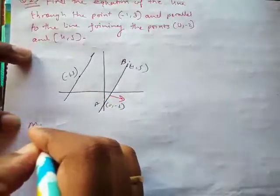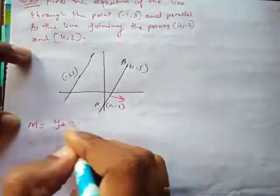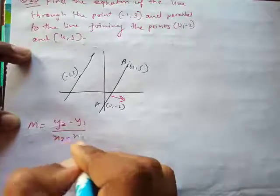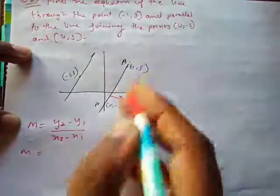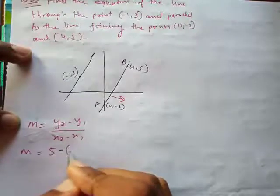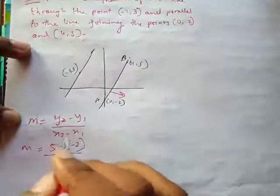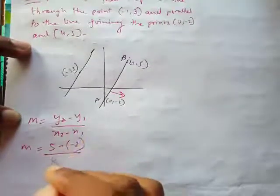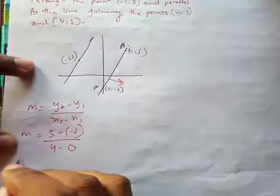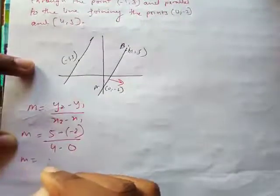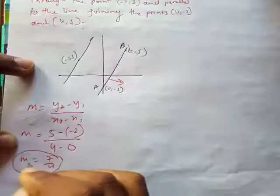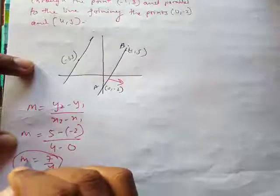To find the slope of the line joining (0, -2) and (4, 5), I use: m = (y2 - y1)/(x2 - x1) = (5 - (-2))/(4 - 0) = 7/4. So the slope m = 7/4.